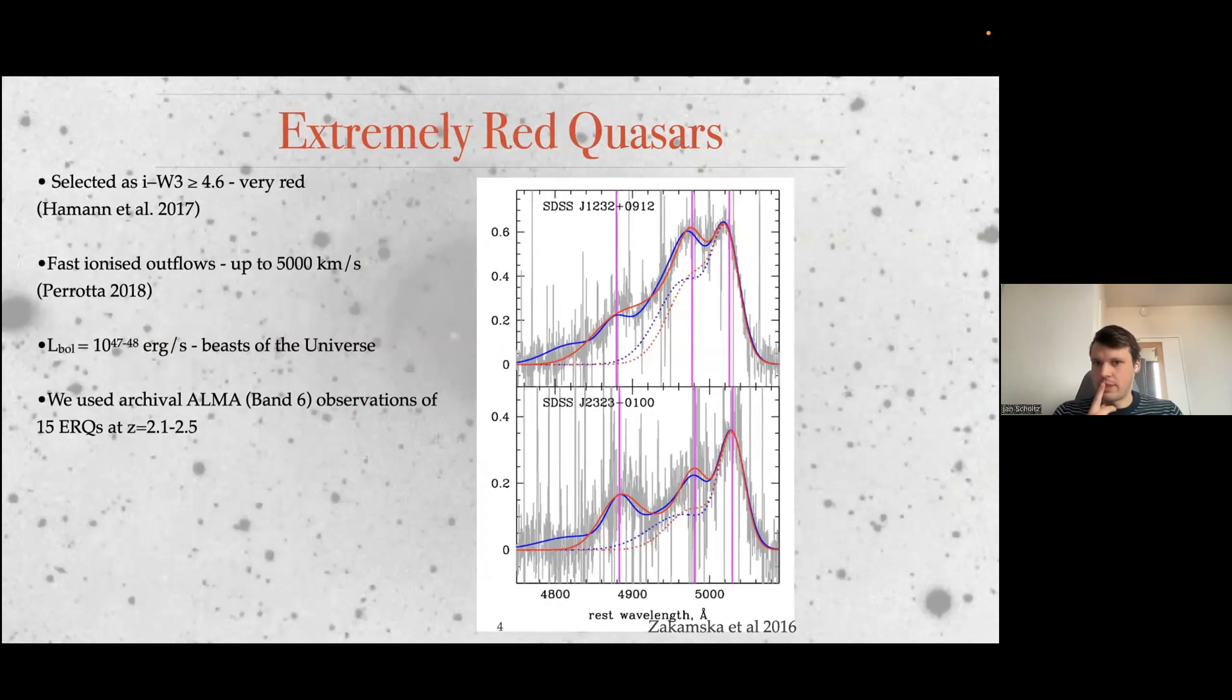So we look into the extremely red quasars. For those who don't really do quasars and are already wondering why do we have so many categories of quasars, I have been dealing with quasars for quite a few years and I have exactly the same question. I think it's just astronomers like to over-categorize things. But in this case, the extremely red quasars were selected as something that is not just red but extremely red, to the point where they are almost not visible in I-band anymore, and you can only actually see them in WISE-W3.